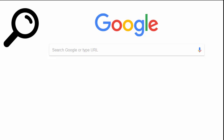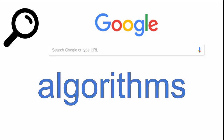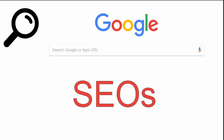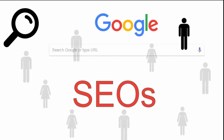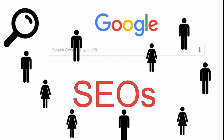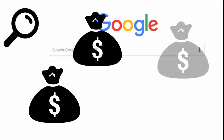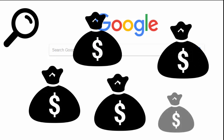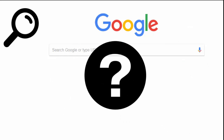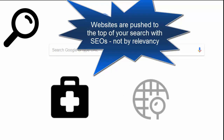Let's first talk about Google. Google searches through algorithms and search engine optimizations, or SEOs. SEOs are a methodology of strategies, techniques, and tactics used to increase the amount of visitors to a website, performed through algorithms. Basically, the important thing to realize is that companies and websites can create SEOs that push their websites to the top of your Google search, sometimes through paying money. This means that the first page of your Google search is not always the most reliable, relevant, and accurate — especially concerning health information and research.